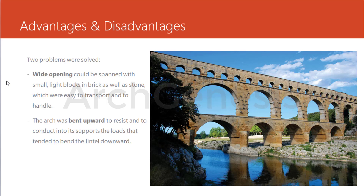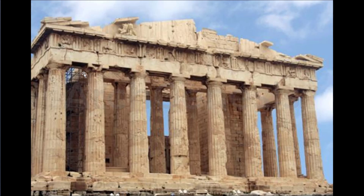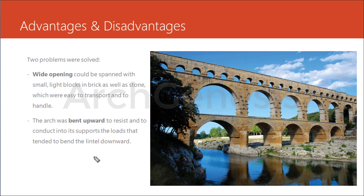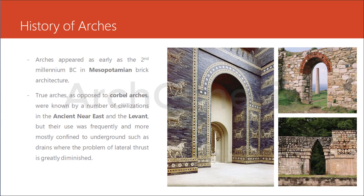Next are the advantages and disadvantages. Before telling you about the advantages of arches, I will tell you what the problem was. This is an example of ancient Greek architecture — a temple in the Acropolis. They used to use huge pieces of stone block as lintels to support the upper structure. The total height of this building is around 45 feet and the span of column to column is 7 feet, yet they still used heavy pieces of stone. Then Romans started using arches, solving two problems: wide openings could be spanned with small stone or brick blocks, easy to transport and handle. The arch was bent upward to resist and conduct into its support the loads that tended to bend the lintel downward.